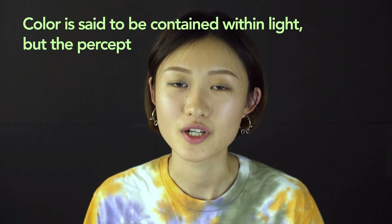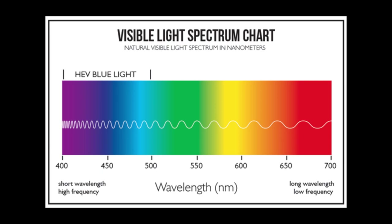Light travels through space with a wave-like motion. The distance between two successive peaks of the wave is called wavelength. Different wavelengths of light appear to our eyes as different colors.